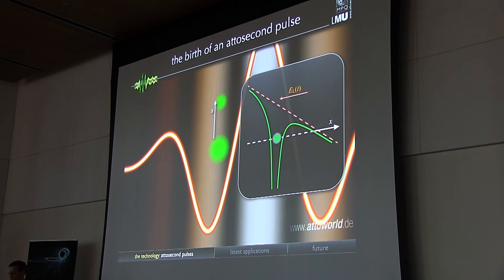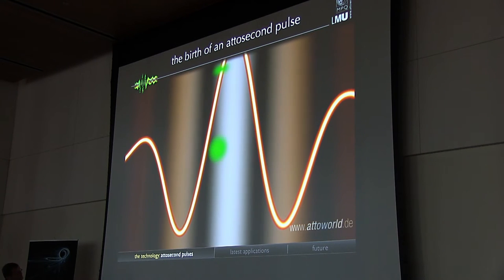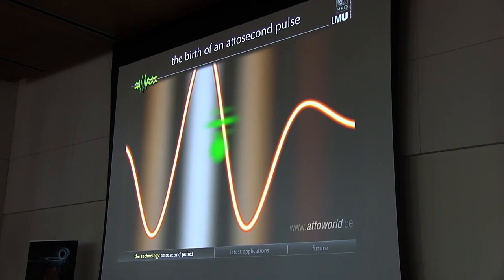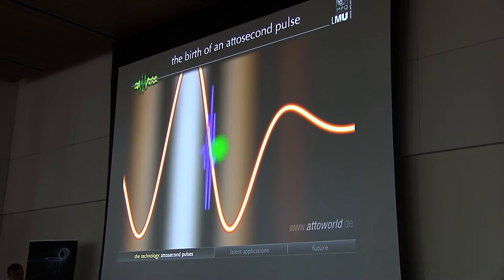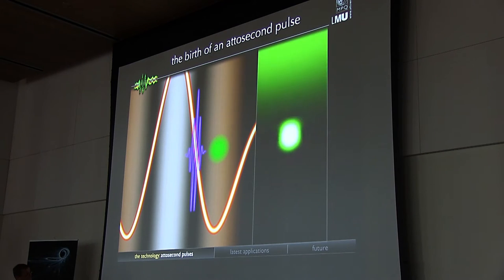So, then in the first moment after this ionization, the electron continues its way, it's pulled away from the atom because the field still points in the same direction. But a little bit later, at this point, the field reverses its direction, pulls the electron back, and this freely propagating wave packet can interfere with the bound state portion of the very same electron. And this interference creates a tiny atomic antenna, and this interference creates a tiny atomic antenna, as you see it here.